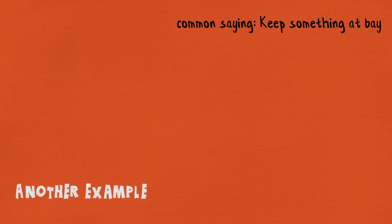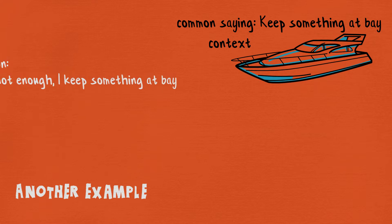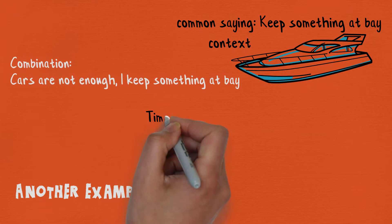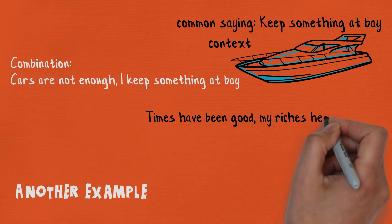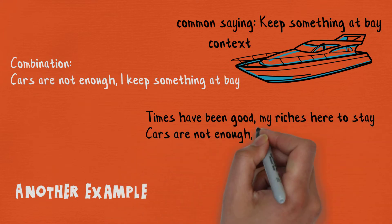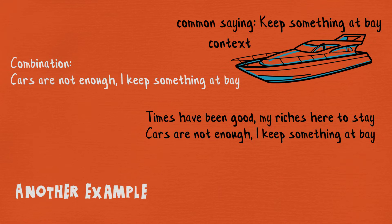Another example: common saying — 'keep something at bay'; context — have a yacht; combination — 'cars are not enough, I keep something at bay'; rhyme form: 'Times have been good, my riches here to stay, cars are not enough, I keep something at bay.'